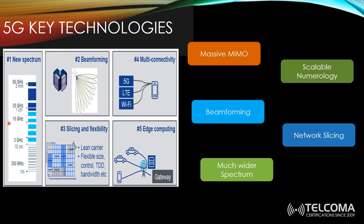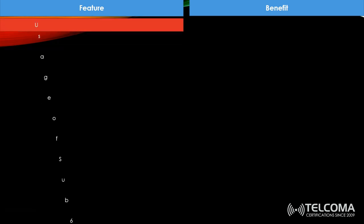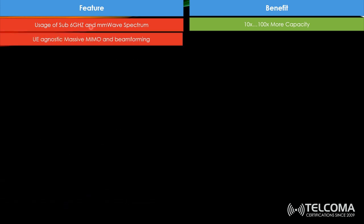The millimeter wave is a new term that did not exist in 4G. 5G uses sub-6 GHz and millimeter wave spectrum, which provides a lot of bandwidth. Compared to lower frequencies, this gives us higher capacity — 10 or even 100 times more capacity. Massive MIMO and beamforming allow us to enhance both coverage and capacity.